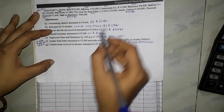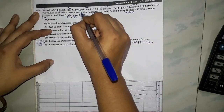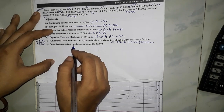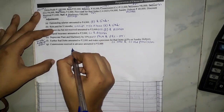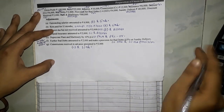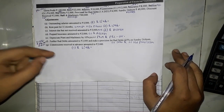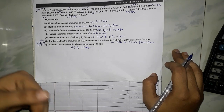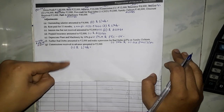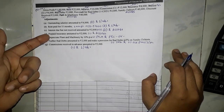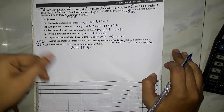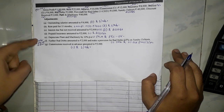Commission received — there is an adjustment on it, so put a tick. Commission received in advance means it is pre-received. For anything pre-received or prepaid, minus it. But commission received in advance means we have received the commission but have not given the services yet, so we are liable to give the services — either services or money back. So this is a liability. Prepaid we minus and put in assets because we can use it in future. But here it's pre-received — so minus from commission — but it becomes a liability because you have taken the amount in advance without rendering services yet.